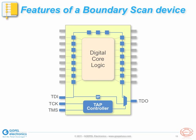Other registers mandated by 1149.1 include the 1-bit bypass register and an instruction register. The instruction register is required to be at least 2 bits long. When certain instructions are loaded, the device I/O pins are essentially disconnected from the core logic. One such instruction is the mandatory EXTEST, which is used to stimulate and observe the I/O pins by means of the boundary scan cells, allowing connectivity at the board or system level to be verified without interference from the device core logic. Other mandatory instructions include Sample and Preload, both of which select the boundary scan register, as well as Bypass, which selects the bypass register. The bypass register is used to bypass the boundary scan register when it is not needed for test purposes.